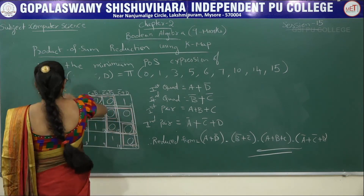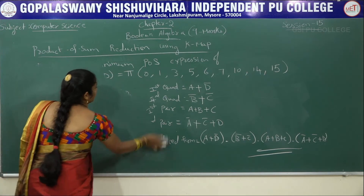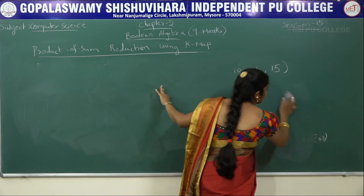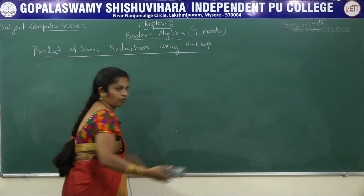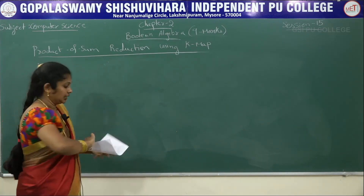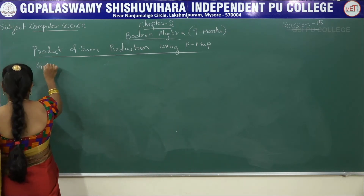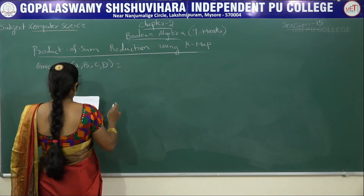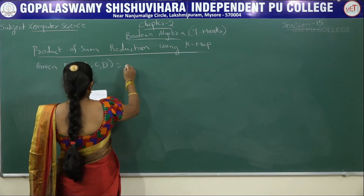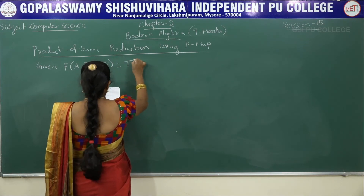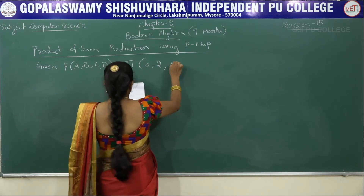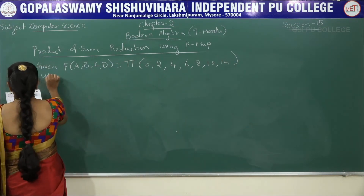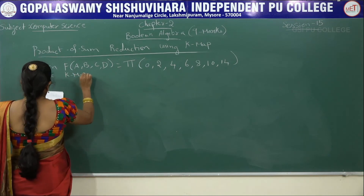Now we will explain one more problem. In the question, you must check whether it is in minterm form or maxterm form before solving. Otherwise you will lose marks. Given: F(A, B, C, D) = π(0, 2, 4, 6, 8, 10, 14). Use K-map to reduce the function F.